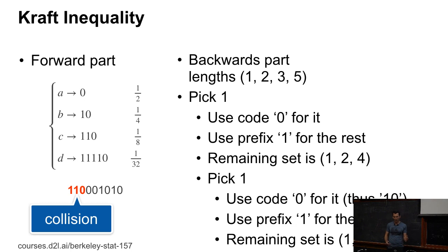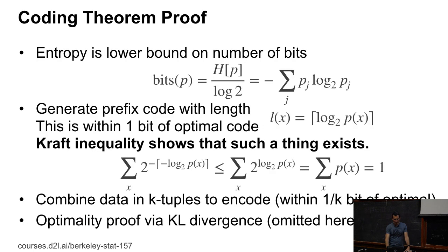I subtract one from all the other numbers. So my two, three, five turns into one, two, four. Then I go and pick, again, one. So I use the zero for it. So I get the code word one zero. I use the prefix one for the rest. The remaining set is now one, three because two, four gets shifted. At every step, I pull some of my symbols off this list. At some point, I run out of symbols. At no point would the residual probability ever have increased beyond what I would have happened before. That's why it works.